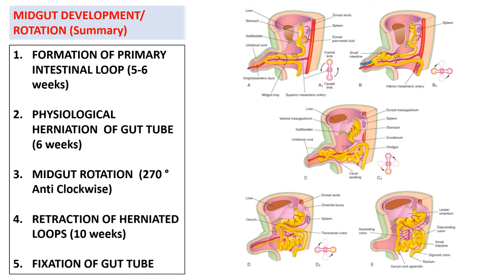Finally, when all the herniated loops have retracted, the last step is the fixation of the gut tube where the mesenteries are established in relation to the gut tube. These are the steps of midgut rotation or midgut development.